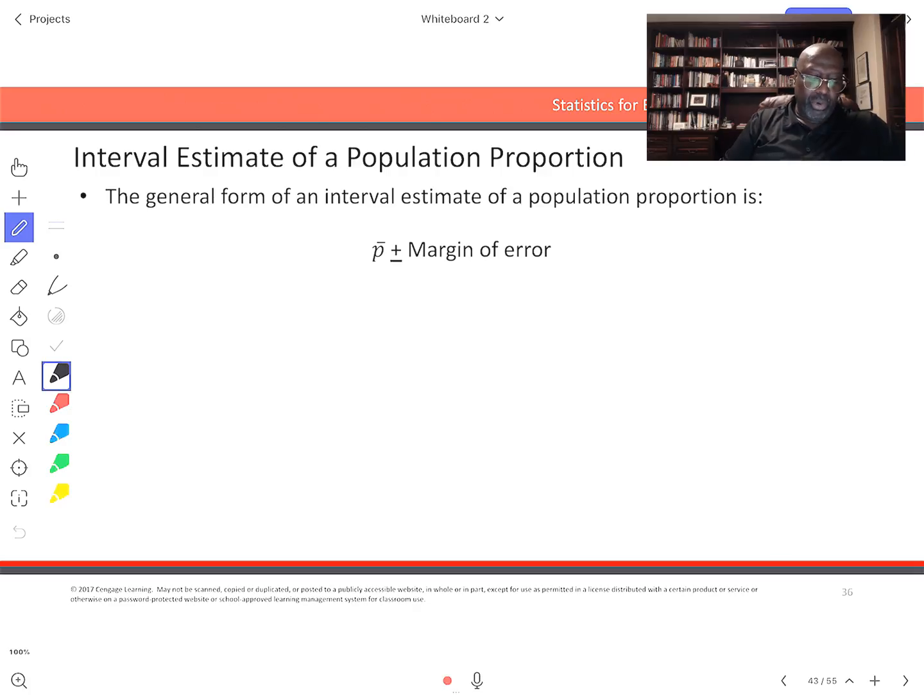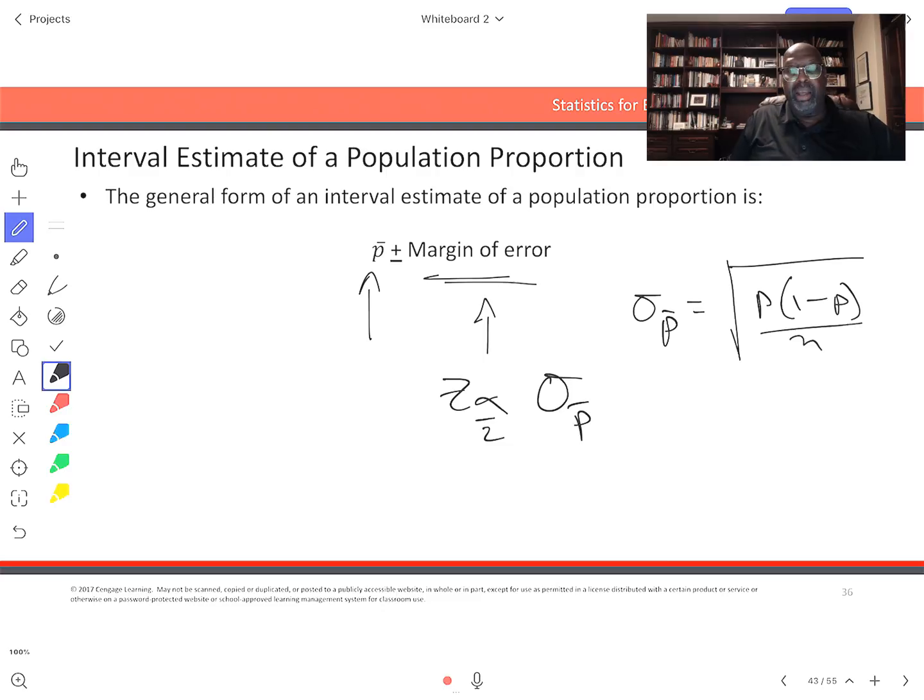In this case, the point estimate for us is the sample proportion and the margin of error happens to be z alpha over 2 times the standard error of the sample proportions. You may recall from chapter 7 when we did sampling distributions that the standard error of sample proportions is given by the square root of p(1 minus p) over n.